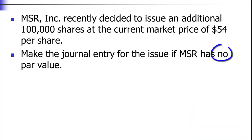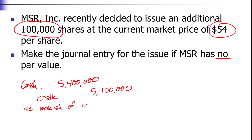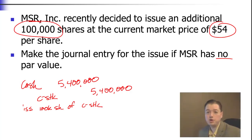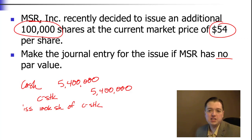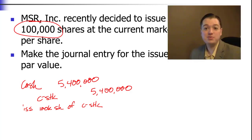What if MSR had no par value? The journal entry is even easier. We're still getting the same amount of cash — 100,000 shares at $54 a share equals $5.4 million — and since there's no par value, it all goes into the common stock account. These are just basic journal entries keeping track of the money coming in from our investors — nice to have some simple ones after all the complexity of long-term debt and current liabilities.